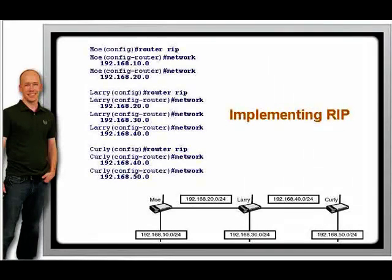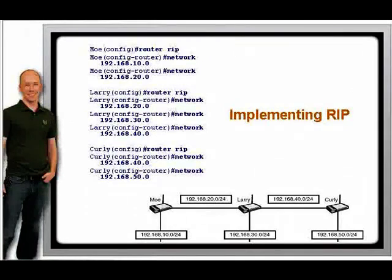Configuring RIP is straightforward. There are four steps to configuring a routing protocol. First, enable the routing protocol. Next, activate it on interfaces, then advertise directly connected networks. Finally, configure optional parameters.